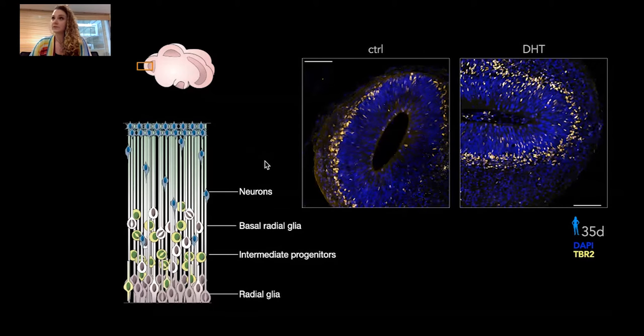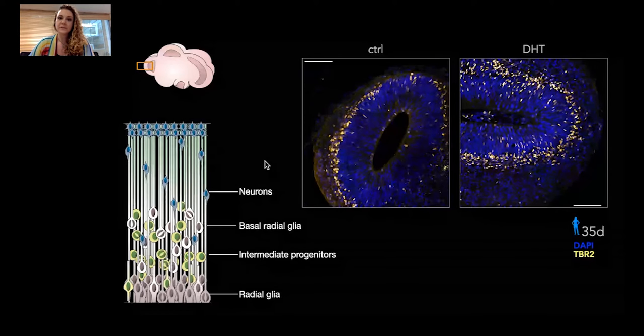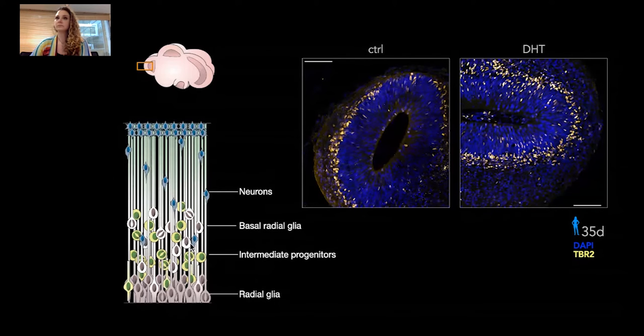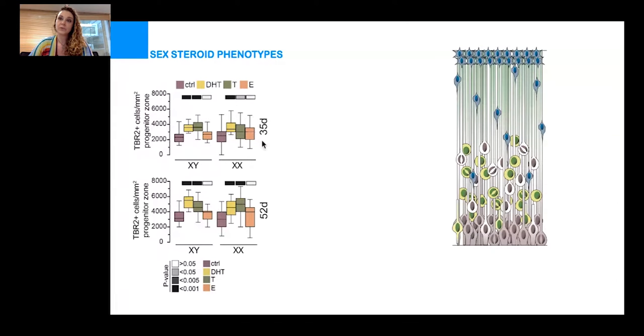When we look at what sex hormones do to our brain organoids, the most obvious phenotype was an increase in the number of intermediate progenitors, which you can see here marked with TBR2—these yellow cells. In the quantifications here, you can see the numbers of intermediate progenitors at both 35 days and 52 days in both male and female cell lines. They are increased under the influence of both DHT in yellow and testosterone in green. We measured several other parameters and it is always androgens that gave a very similar response. What is very important is that there was no difference in response to androgens between male and female cell lines.